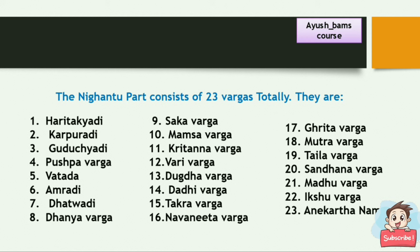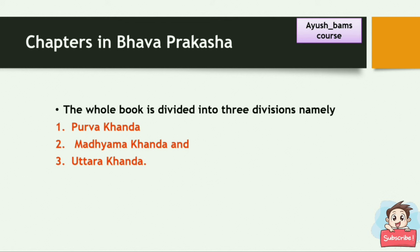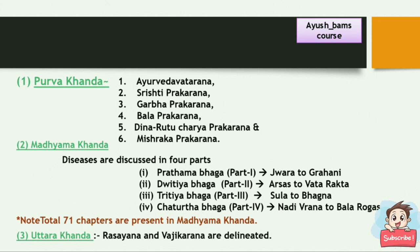This whole book is divided into three divisions: Purvakhanda, Madhyamakhanda, and Uttarakhanda. Purvakhanda contains six parts: Ayurveda Avatarana, Shristi Prakarana, Garbha Prakarana, Bala Prakarana, Dinarutacharya Prakarana, and Mishraka Prakarana.